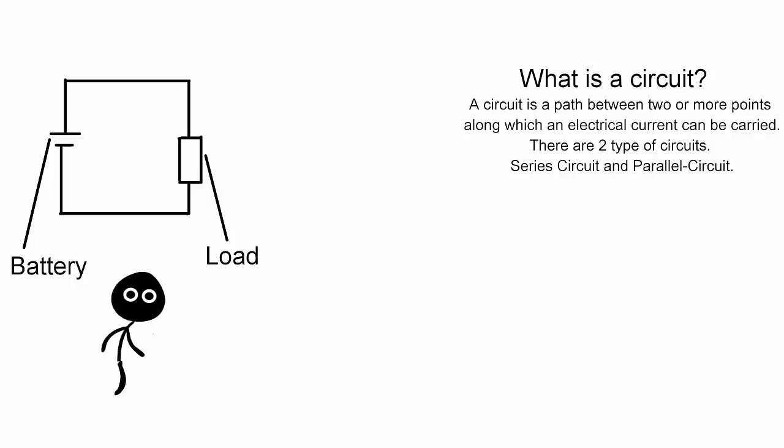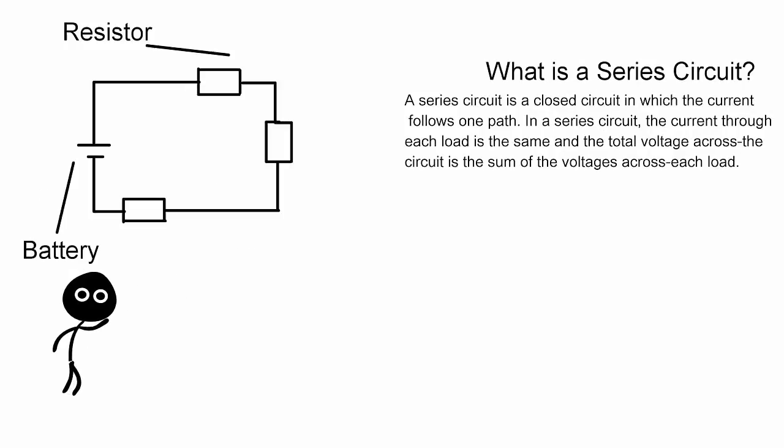Series circuit and parallel circuit. What is a series circuit? A series circuit is a closed circuit in which the current follows one path. In a series circuit, the current through each load is the same and the total voltage across the circuit is the sum of the voltages across each load.